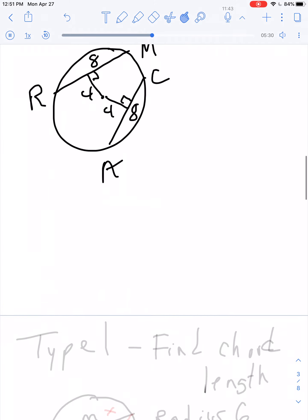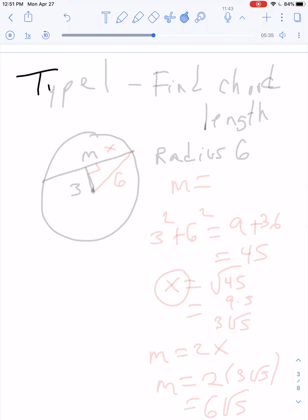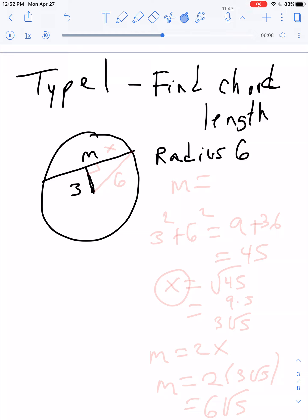So there are three types of questions that you're going to see. I'm going to call them type 1, type 2, and type 3. Here's type 1. It's called find the chord length. Let's say we have a circle. And we have this chord. We'll call it M. And we have the center of the circle here. And we know the distance is 3. And that the radius is 6. That's what you're given.